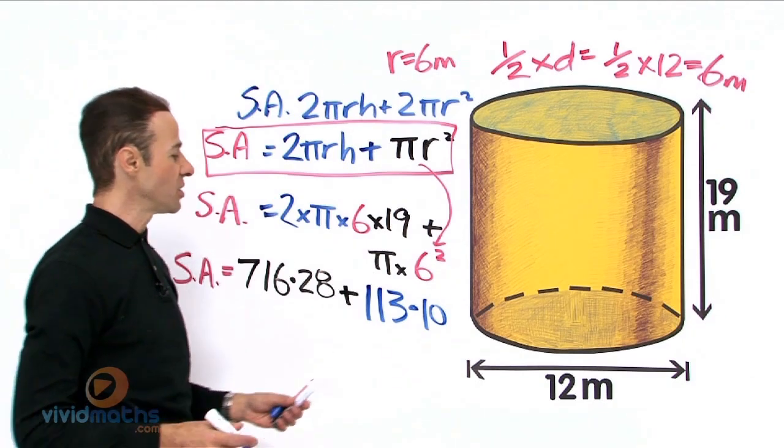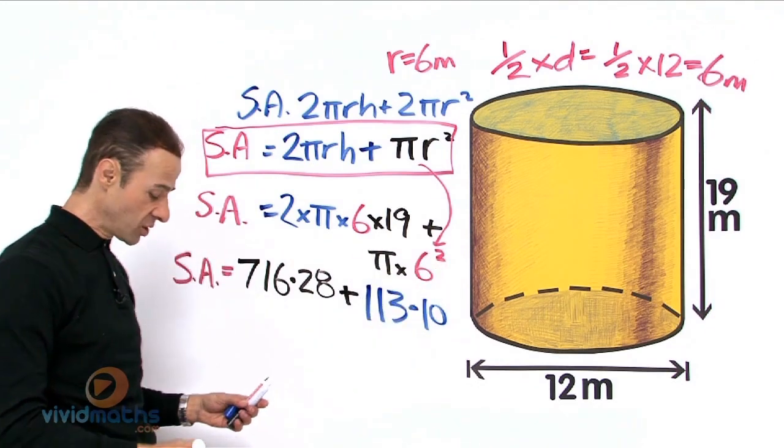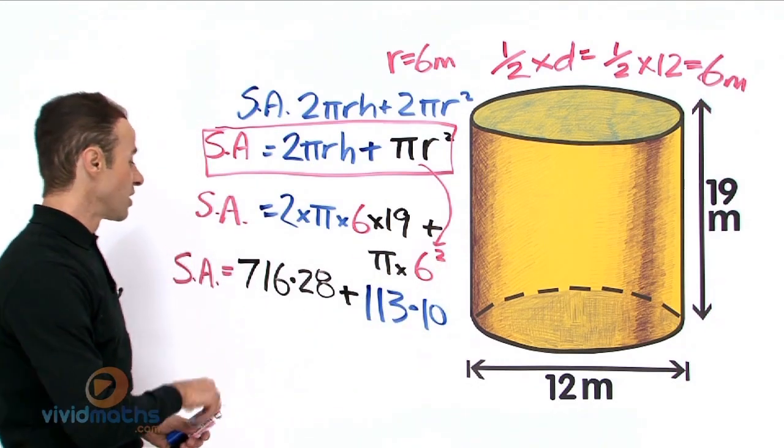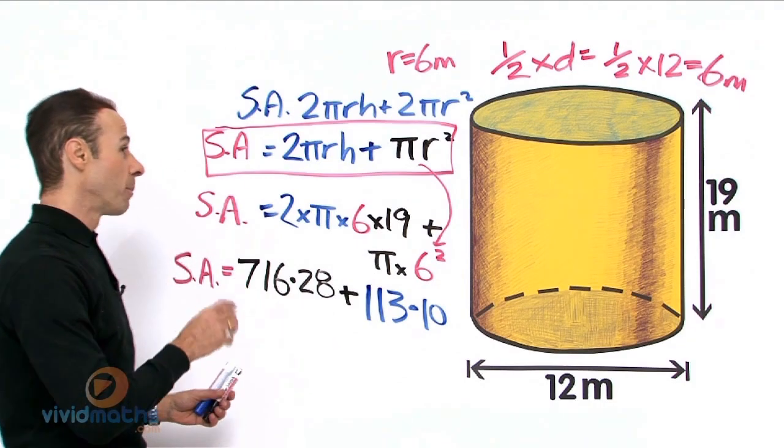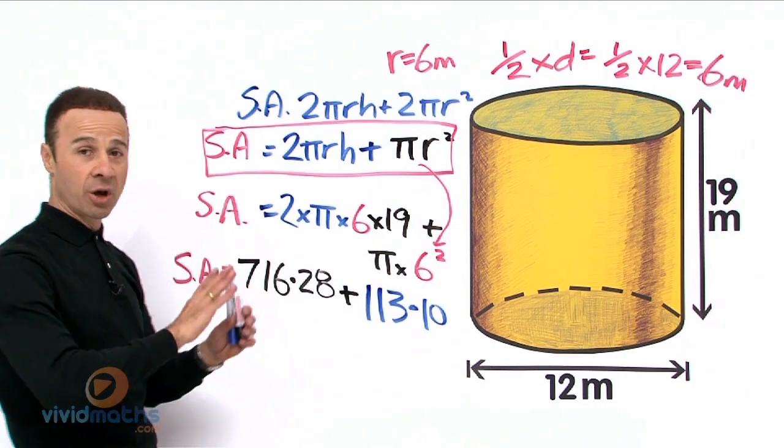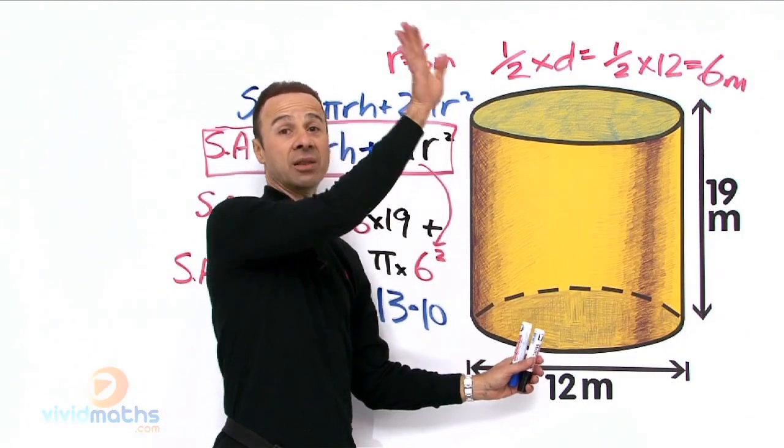Now all we have to do now is add these two guys up and we will have the complete surface area of that giant cylinder. So let's do that. 716.28 plus 113.10, grand total, complete total surface area of this excluding the lid, there is no lid on it.